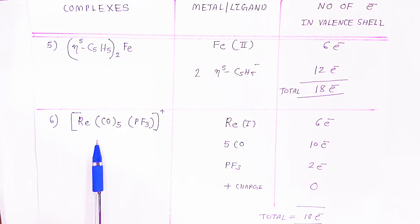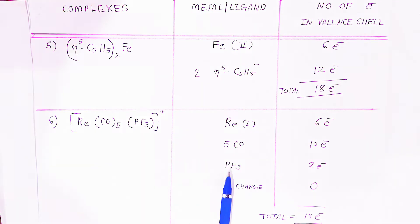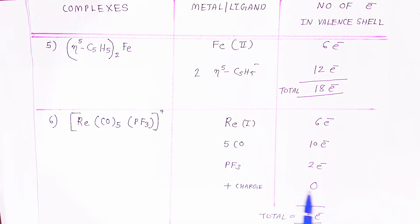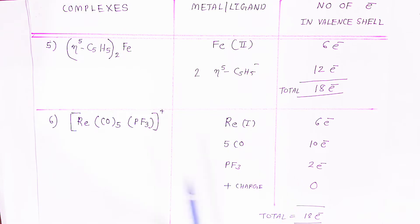In the sixth example, we have a Mn1+ complex. The outermost valence shell has 6 electrons. Five carbonyl ligands provide 10 electrons, and phosphorus trifluoride (PF3) provides 2 electrons. The +1 charge contributes 0 electrons. When you add — 6 + 10 + 2 + 0 — the total is 18 electrons, so this complex also follows the 18 electron rule and is stable.